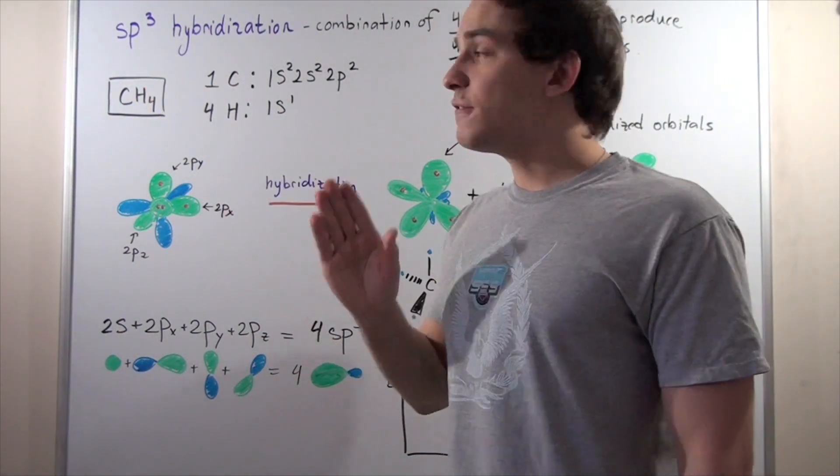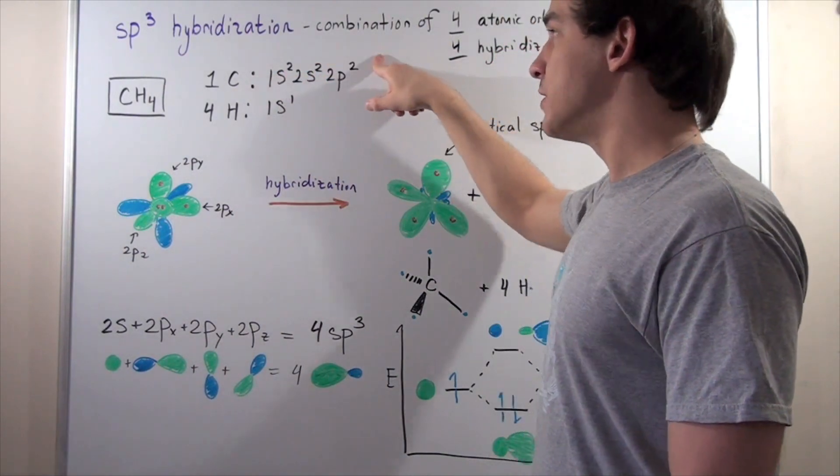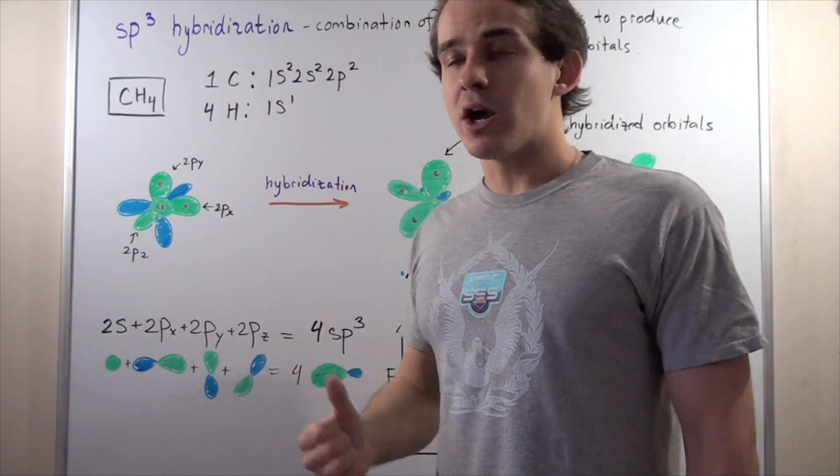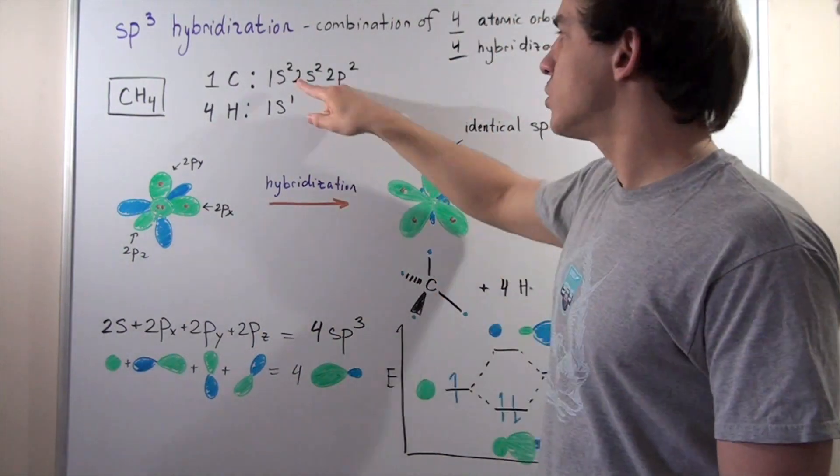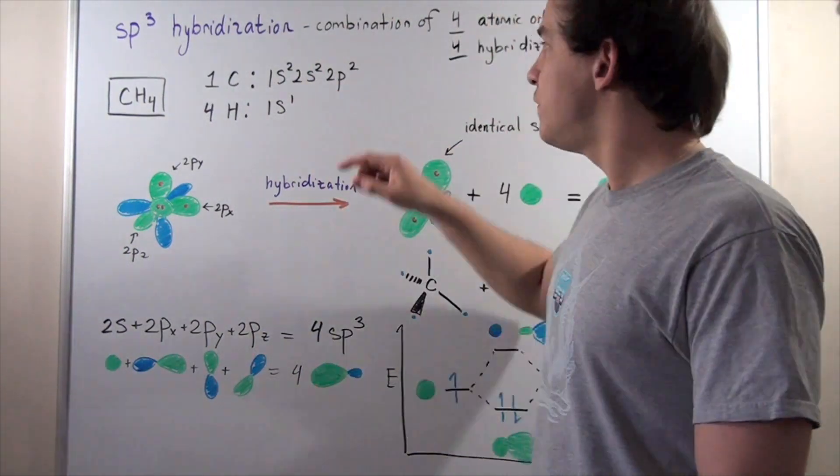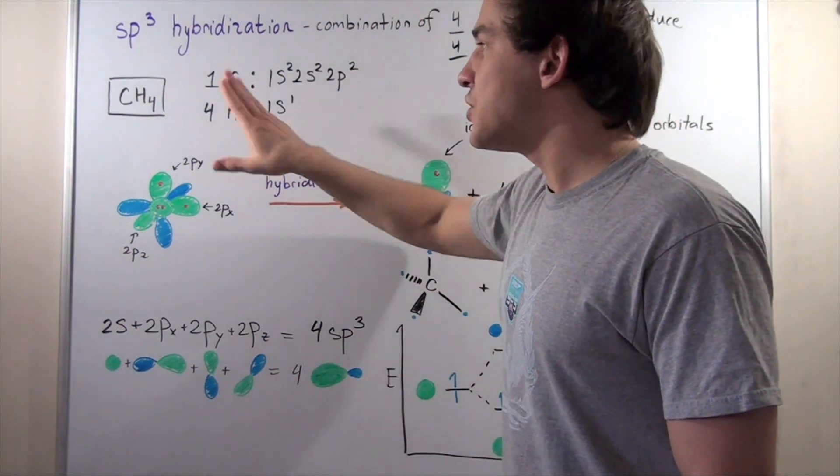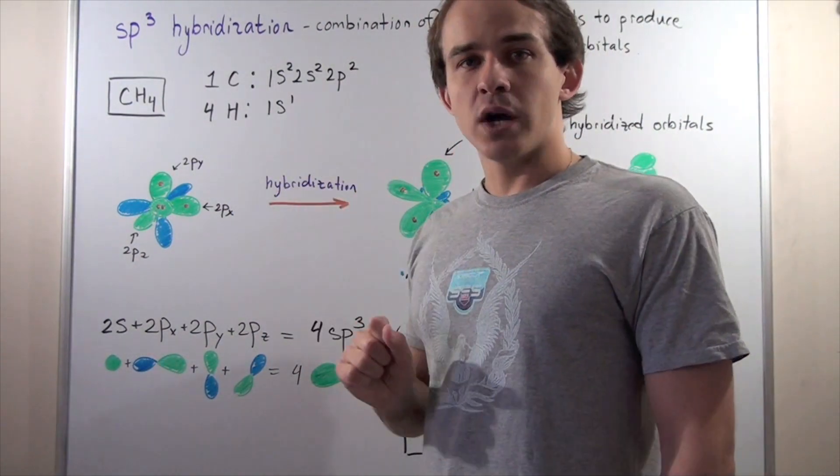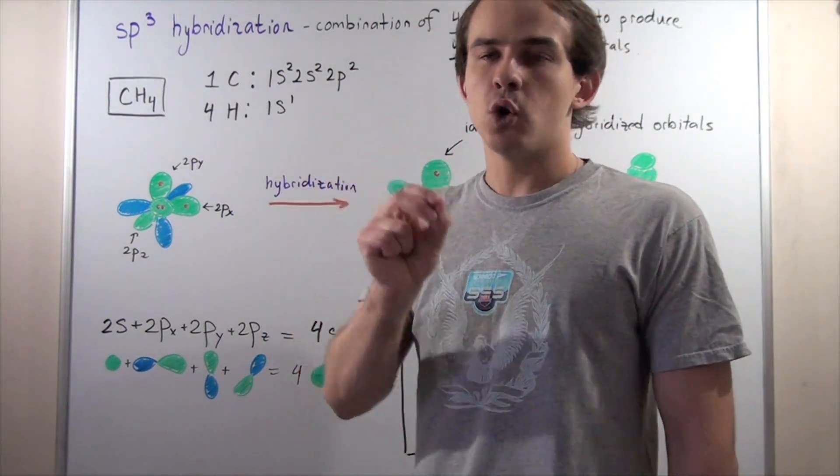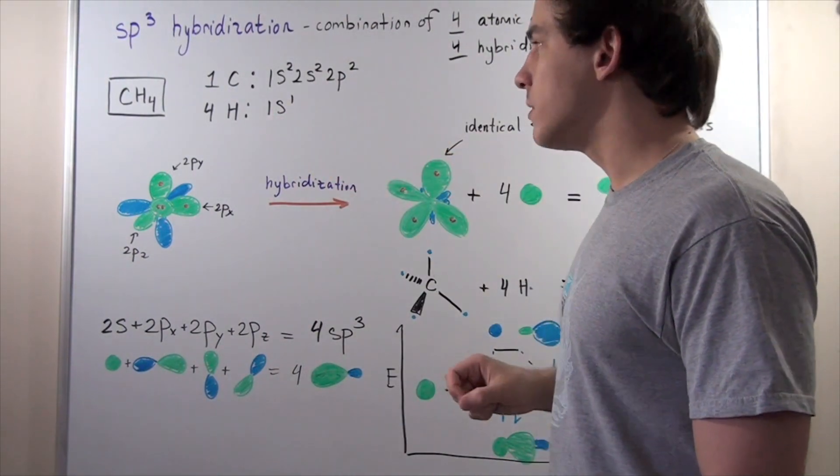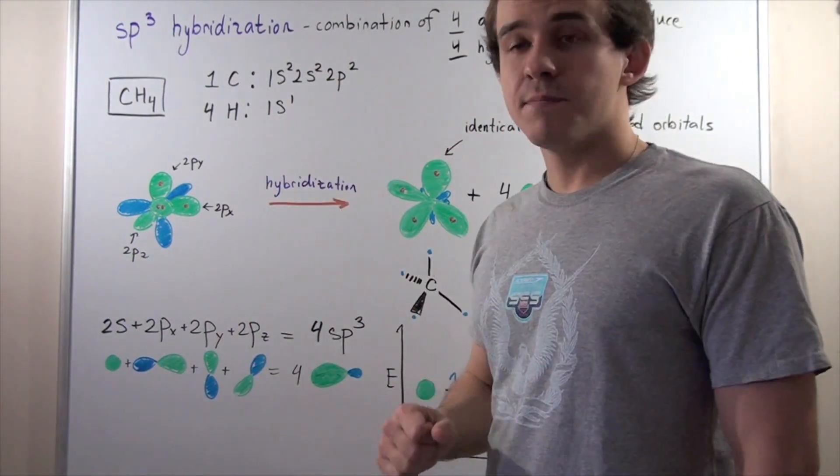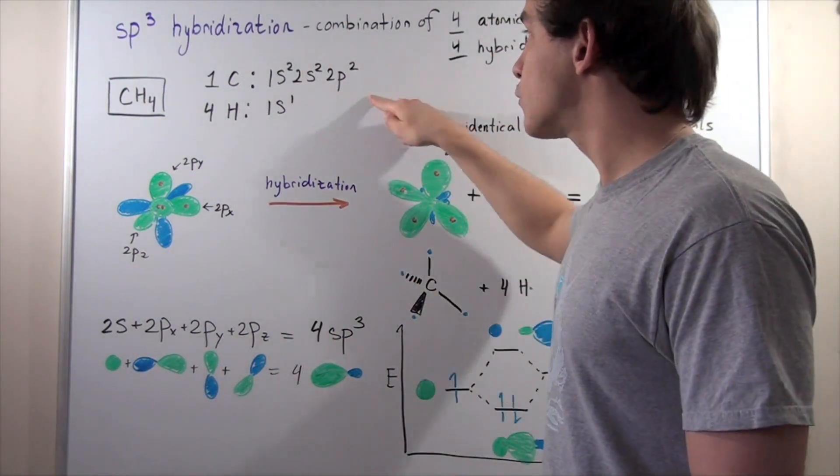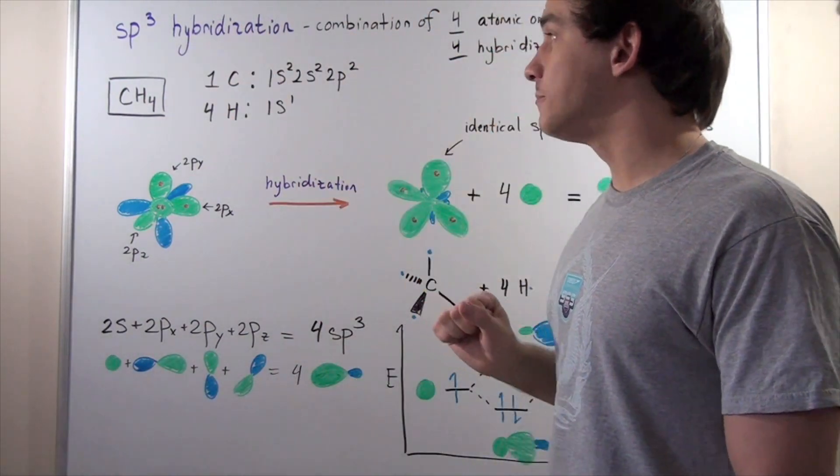The carbon has the following electron configuration. It has a total of six electrons: two electrons go into the 1s, two electrons go into the 2s, and two electrons fill the 2p. Each hydrogen atom has one electron, and that electron goes into the 1s orbital. We have one unpaired electron per hydrogen atom and four unpaired electrons for the carbon atom.